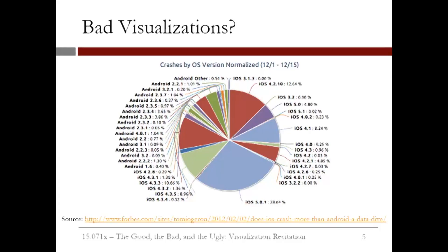We have a specimen right here. This is a pie chart of phone application crashes, showing what percentage of all crashes took place in each mobile operating system. This dataset contains information for all versions of Apple's iOS, which is used in the iPhone, as well as the various versions of Google's Android.